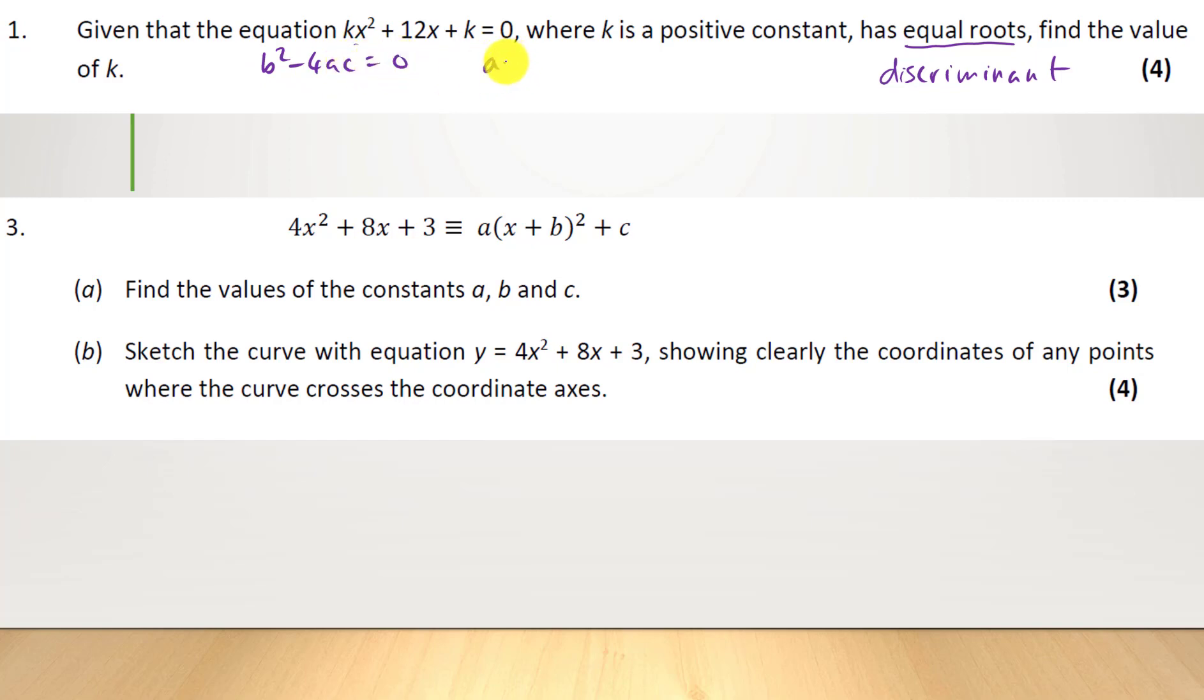So a equals k, b equals 12 here, and c equals k, so let's just substitute that in. We're going to get 12² minus 4 times k times k equals zero, which is going to give us 144 minus 4k² equals zero. So we know by adding 4k² on each side, we're going to get 4k² equals 144.